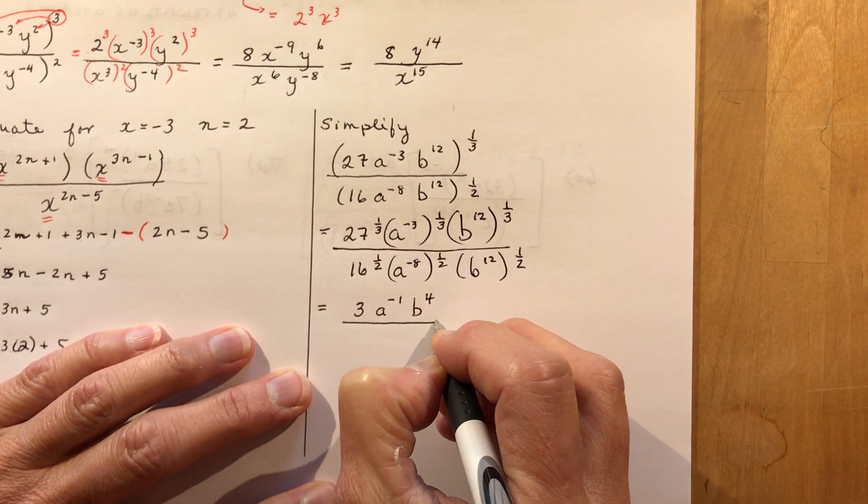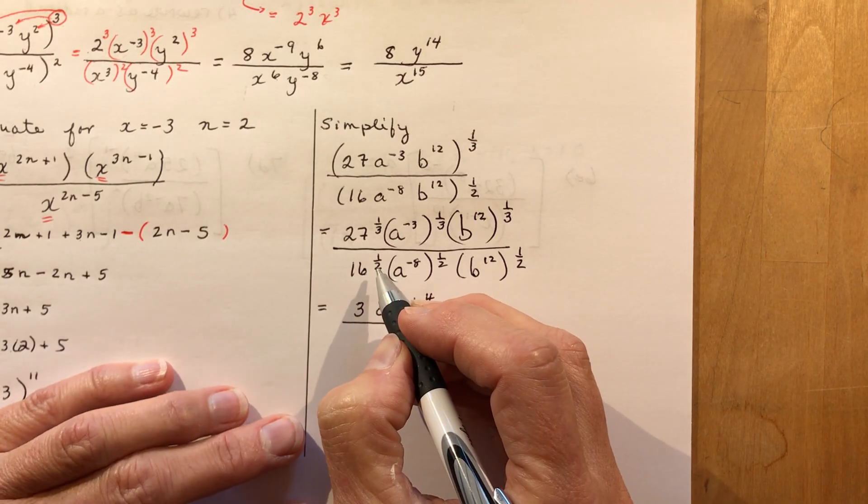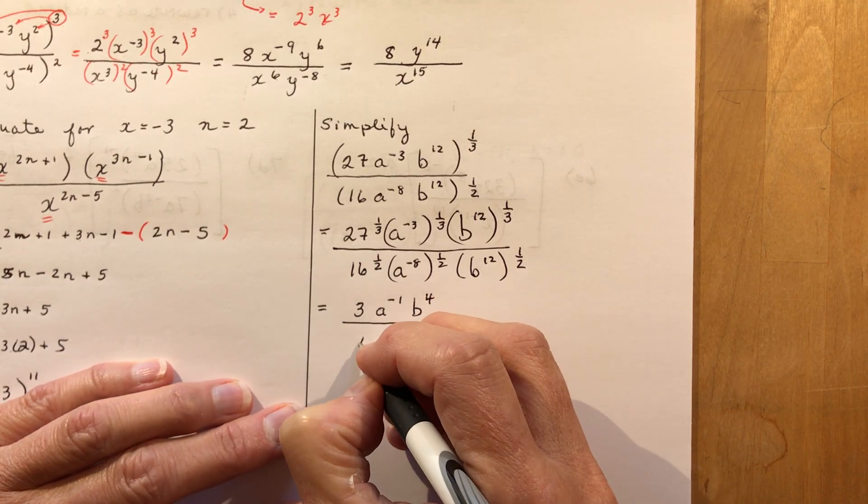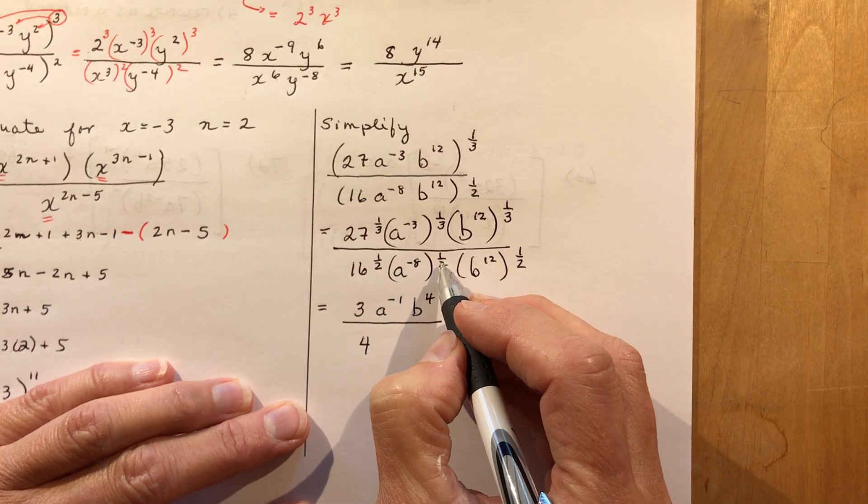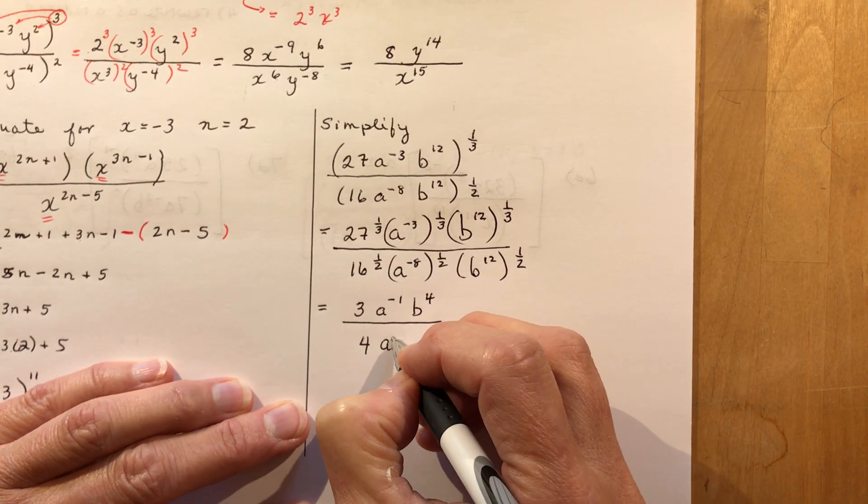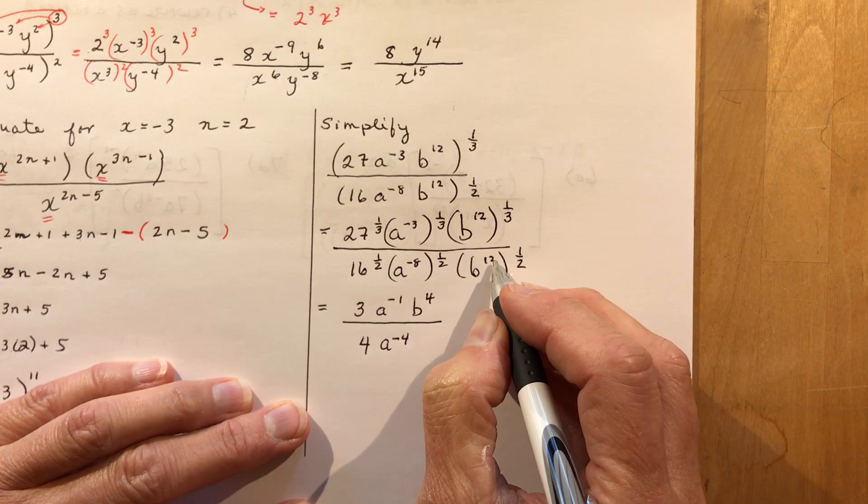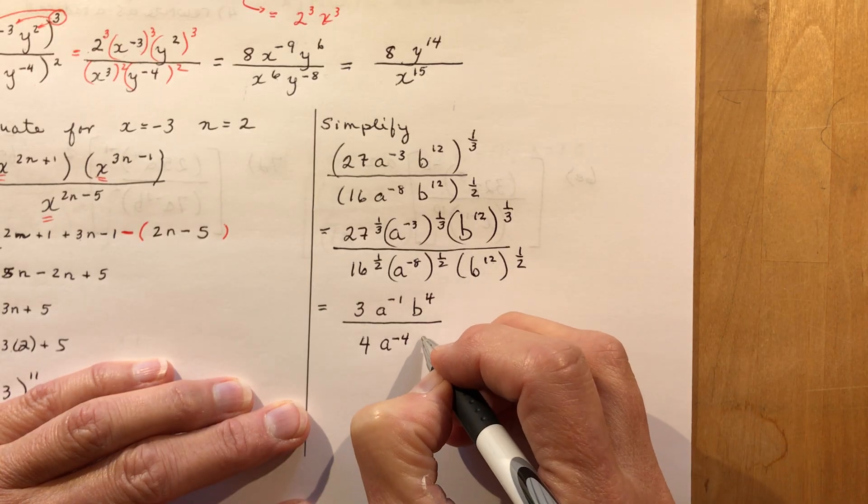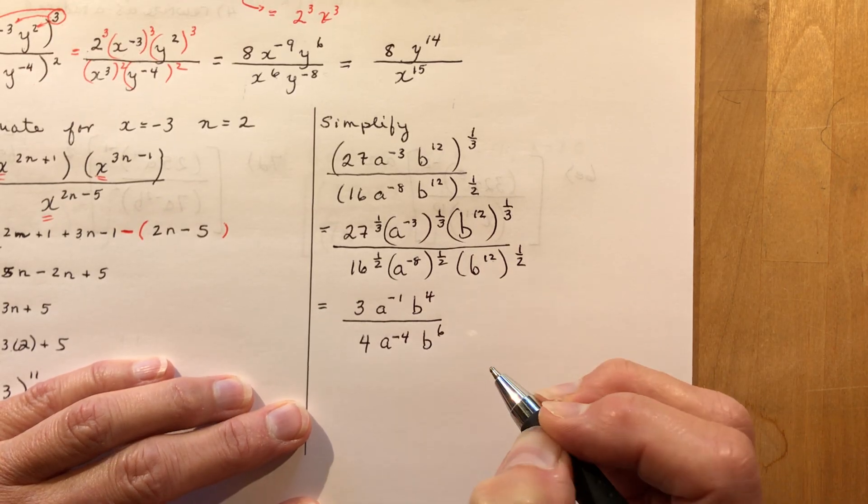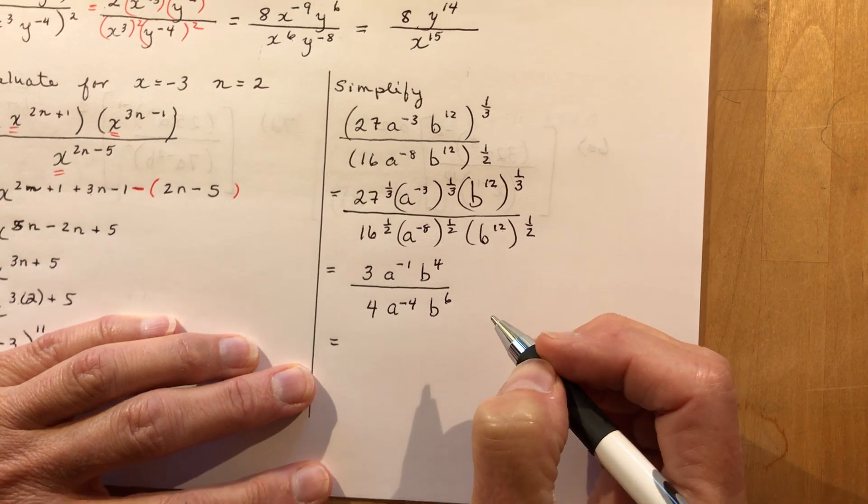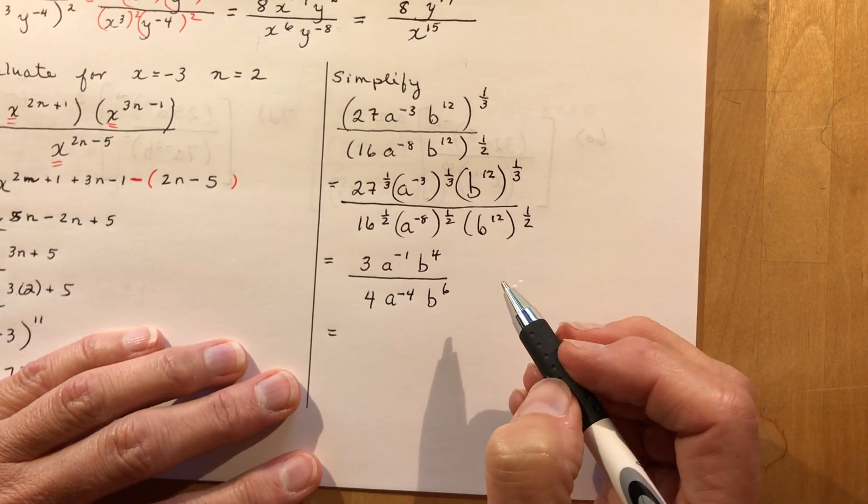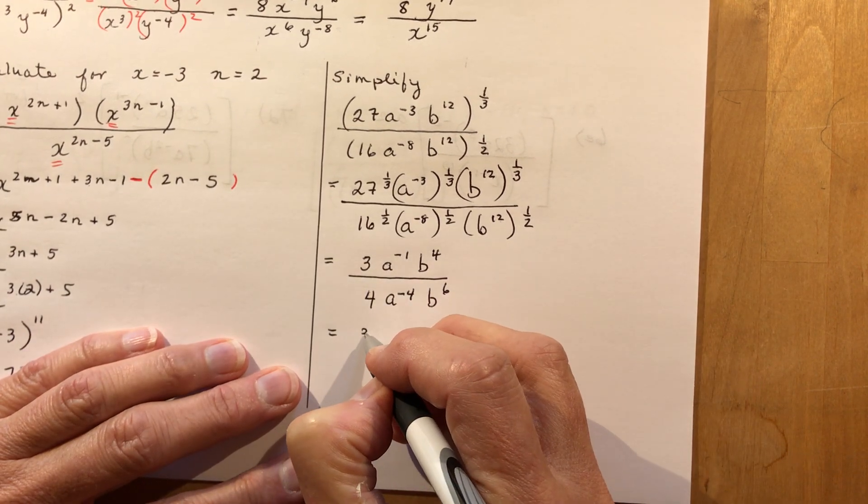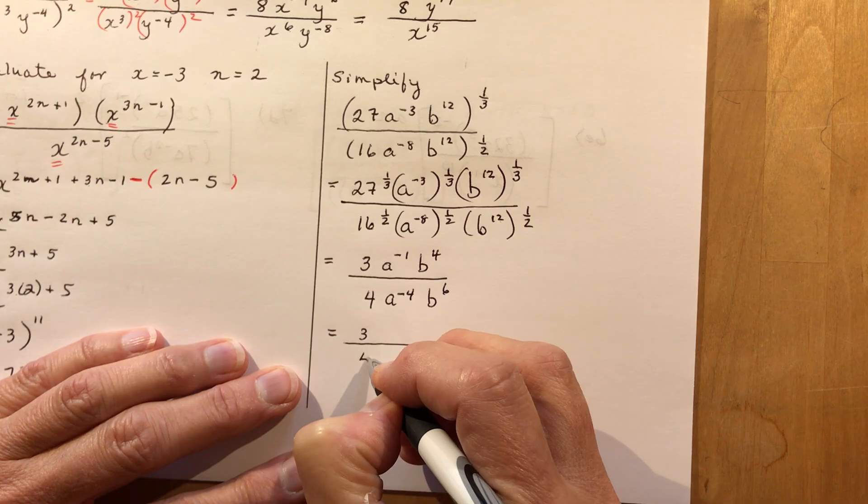So now I have the cube root of 27, that's 3. And a to the minus 1/3 times 1/3 would be a to the minus 3 over 3 or minus 1. And b, 12 times 1/3, that's 12 over 3 is 4. And in the denominator, 16 to the half, that's the square root of 16, which is 4. A to the negative 8 to the half power, that's a to the minus 4. And b, 12 times 1/2 is 6.